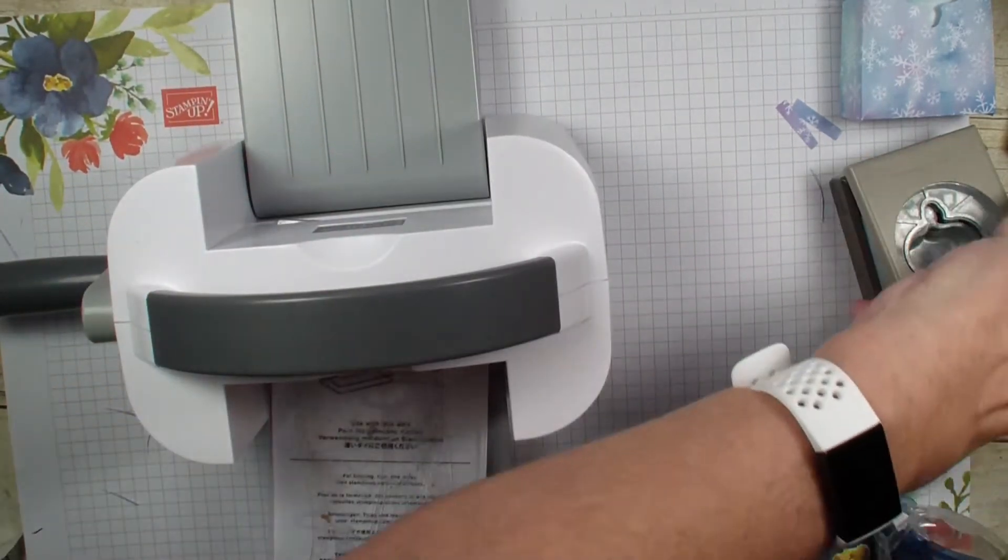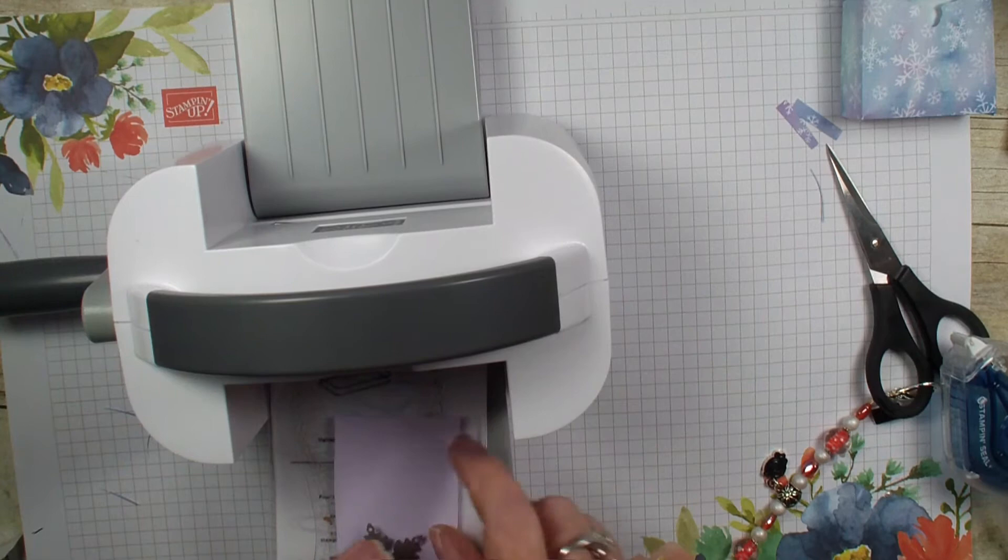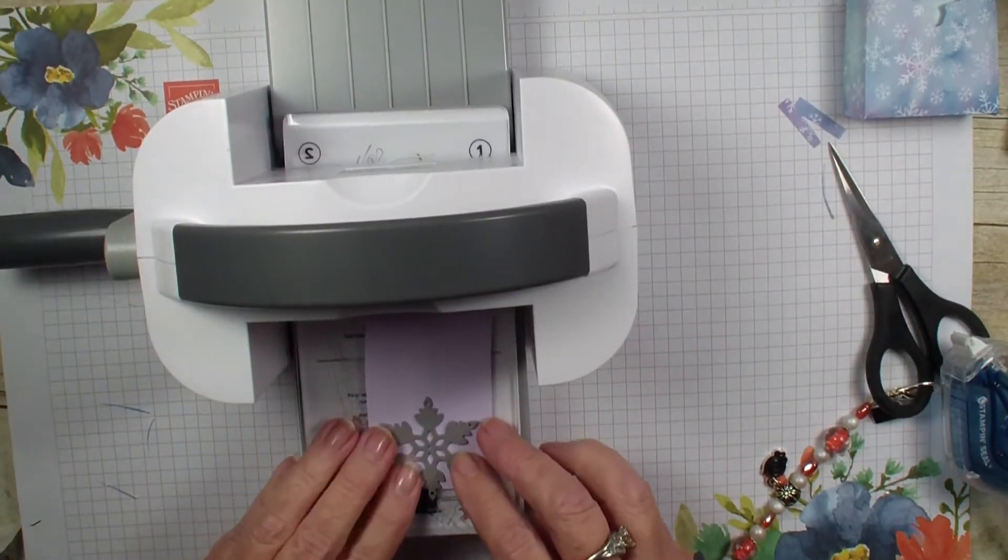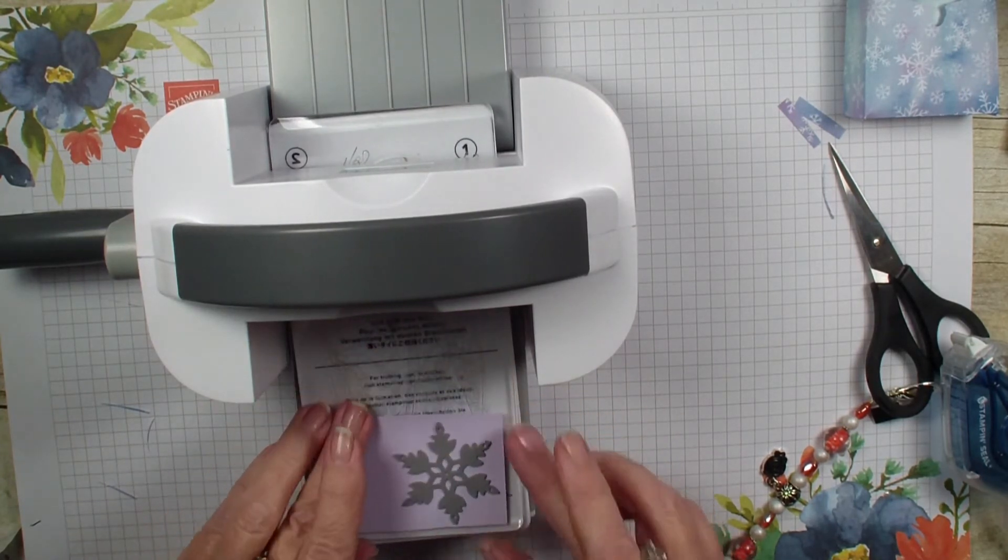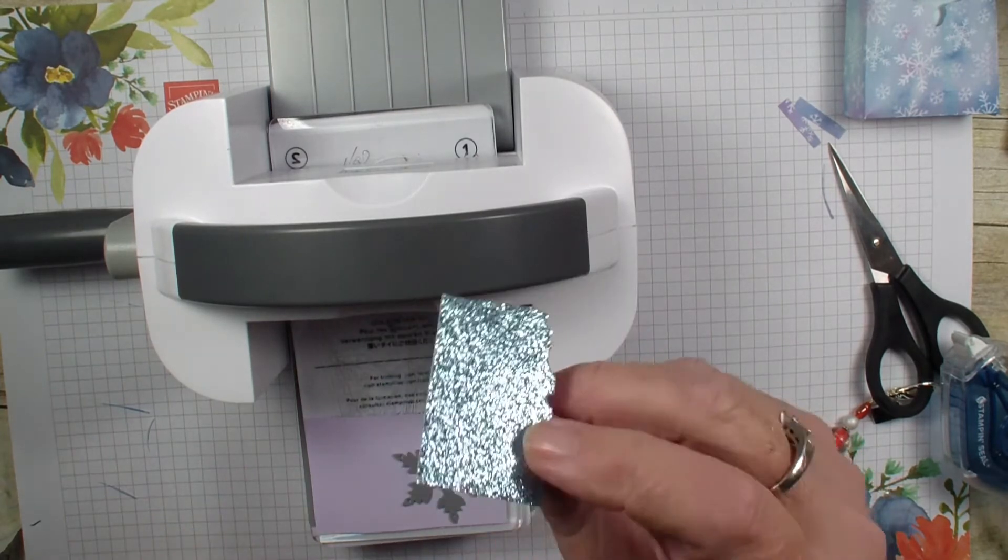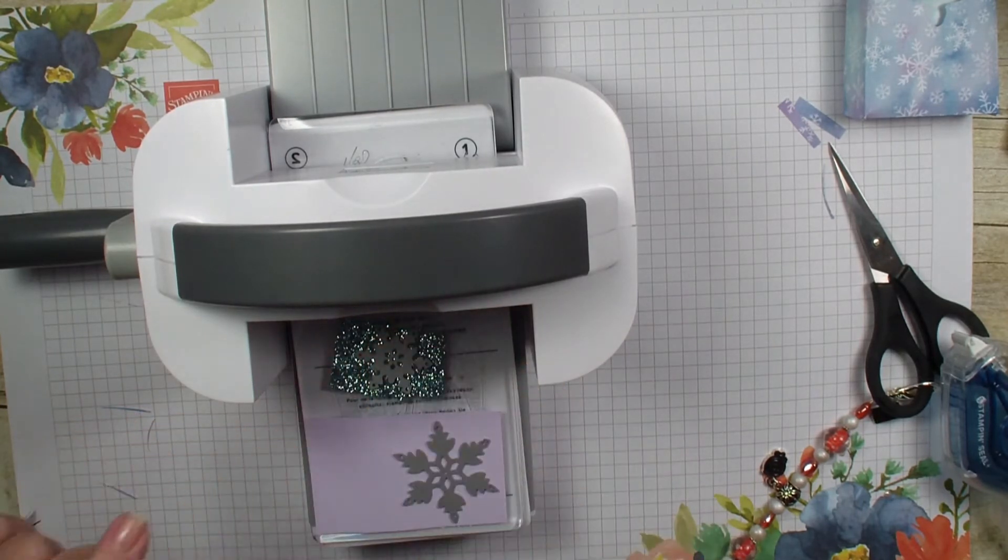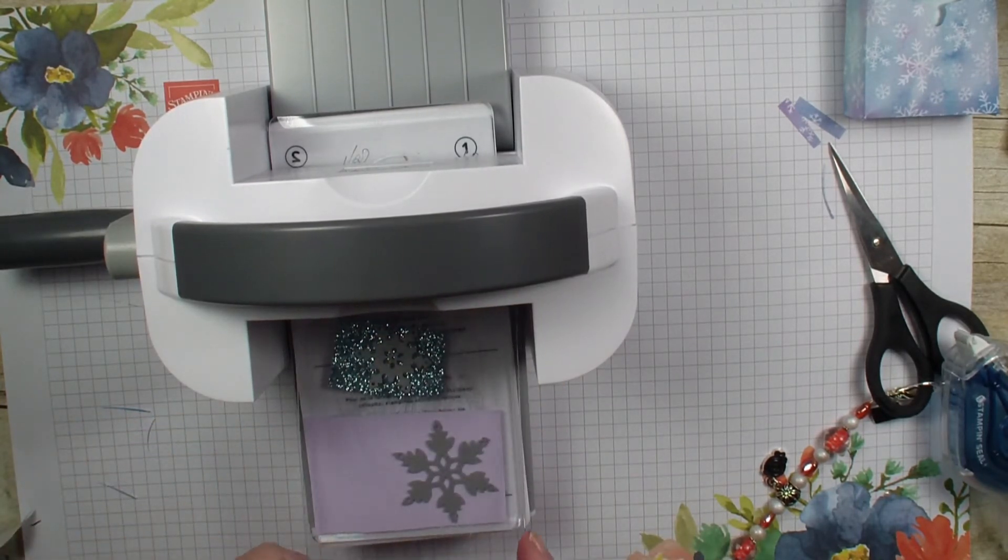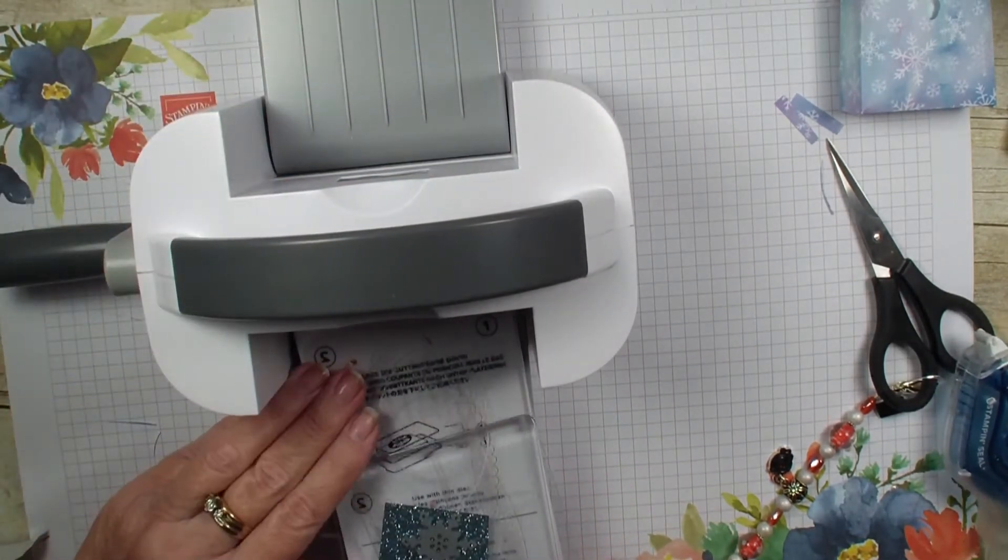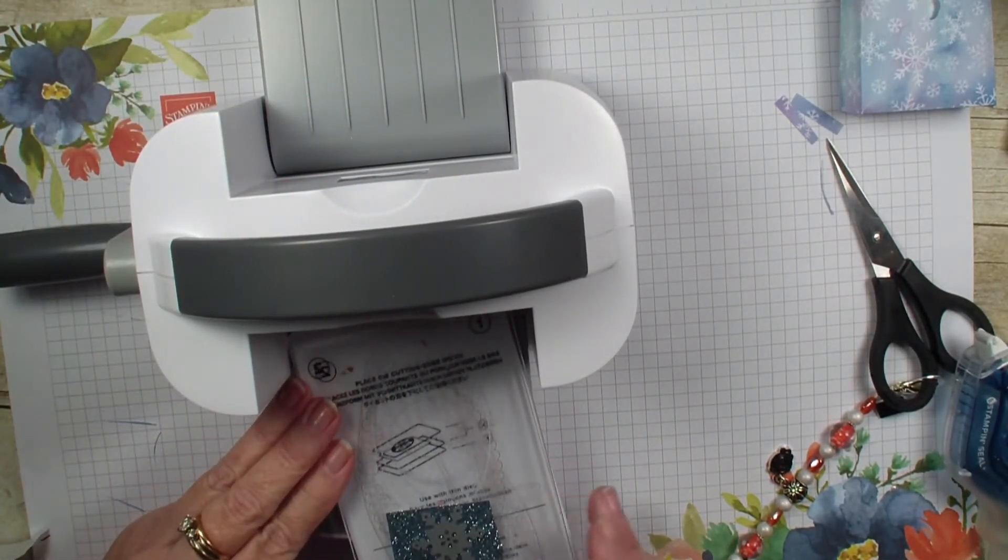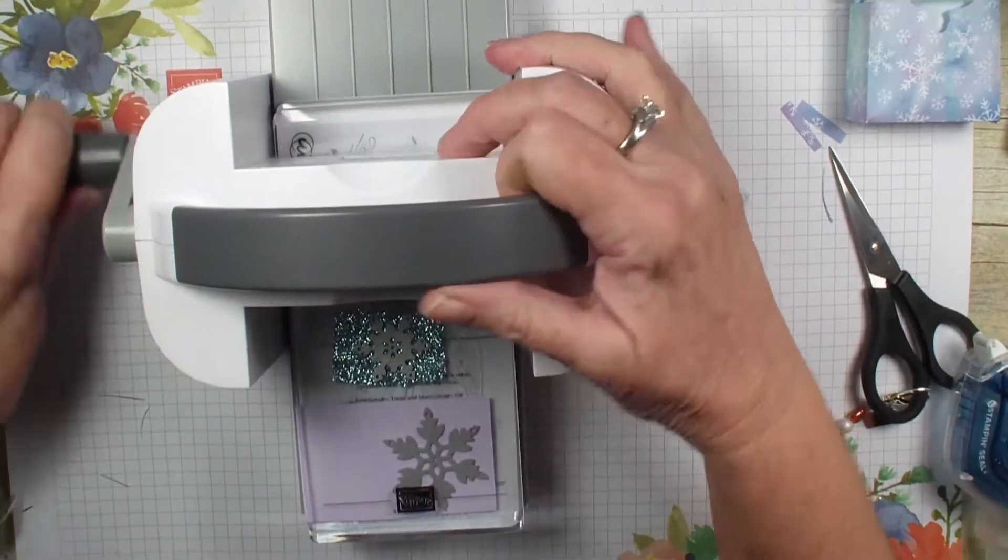What I am going to do is, I have a piece of Purple Posey and I am going to be using the Snowflake Dies. So we have the Purple Posey and the Balmy Blue Glimmer Paper and we are going to take the smaller Snowflake and run both of them through. I have found that with the smaller Stampin' Cut and Emboss you want to make sure that your sandwich is nice and even to get it to go through.